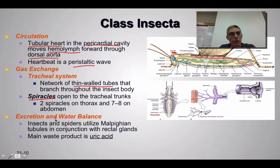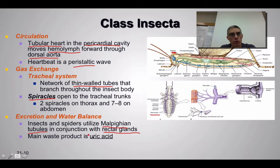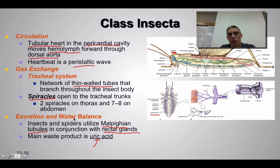When it comes to excretion, insects and spiders utilize Malpighian tubules in conjunction with rectal glands. These organs serve two functions: one is to remove waste — in this case in the form of uric acid — and the second is ion balance, meaning maintaining the water balance between the inside and outside of the animal.